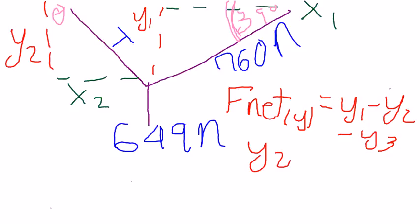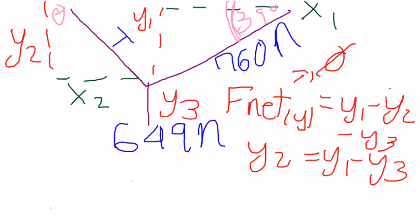So Y2 equals Y1 minus Y3. Y1 uses sine instead because it's opposite the angle with the hypotenuse. So Y1 equals 760 sine 39.